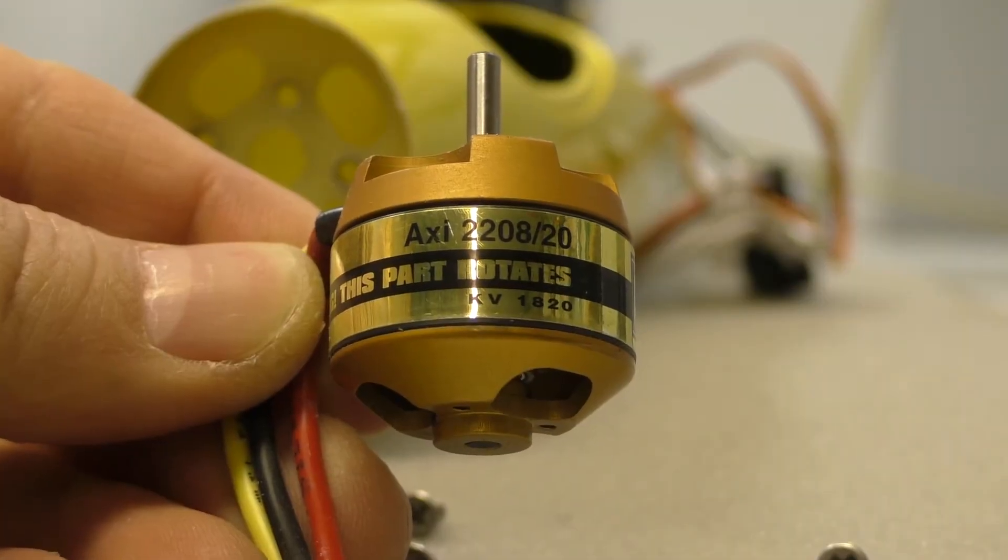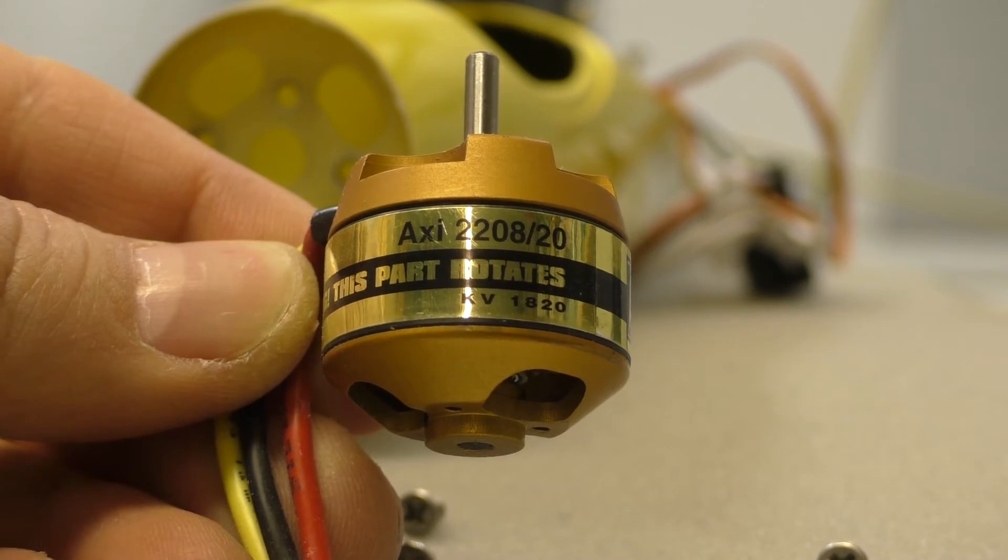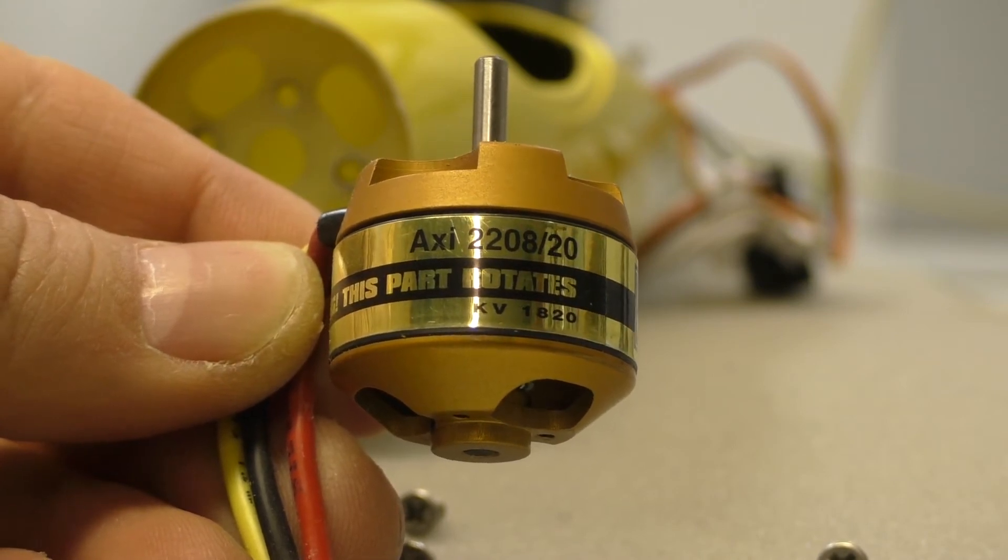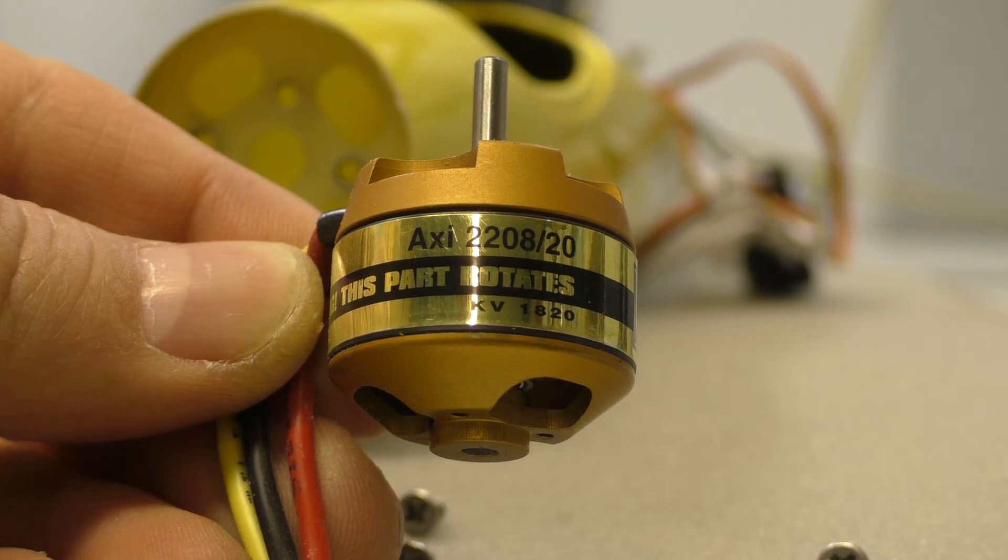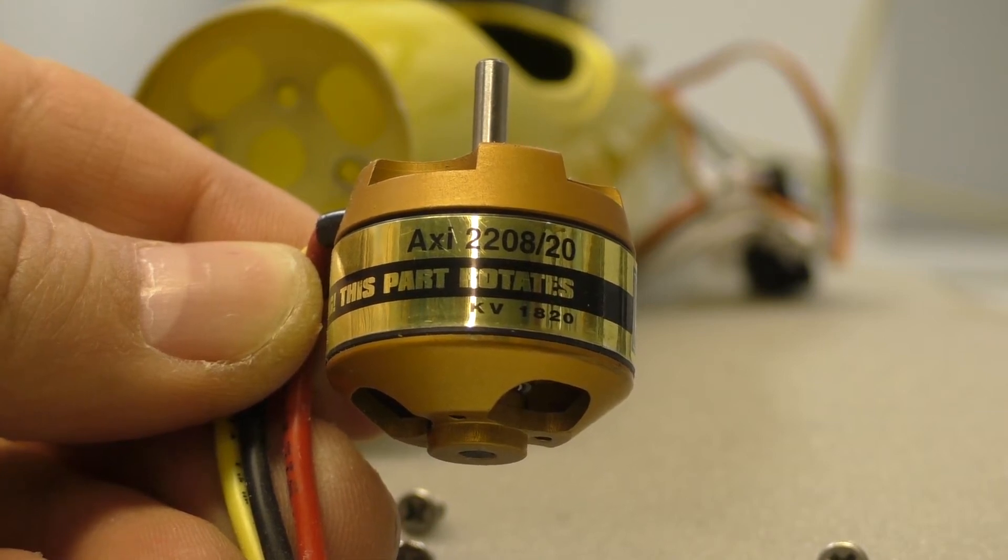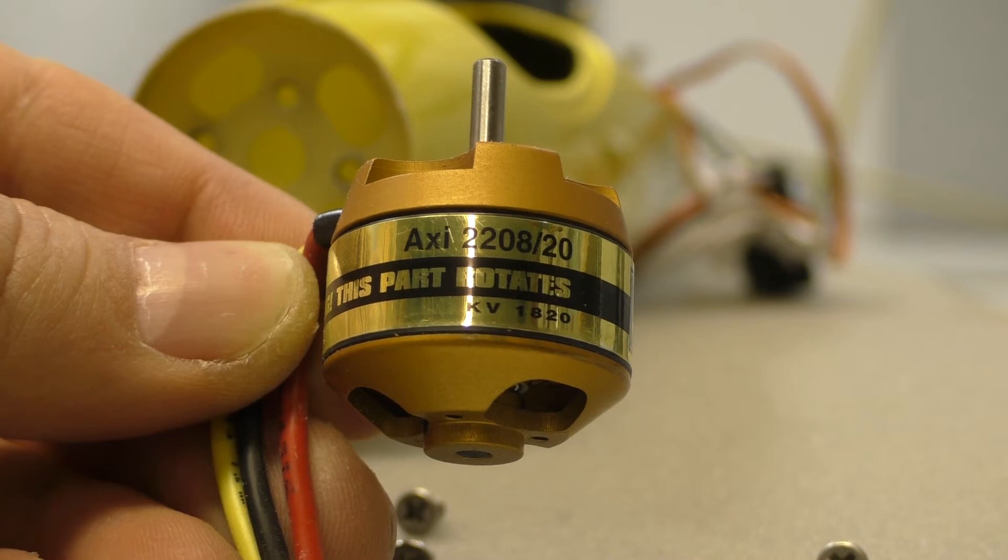This motor is fine on 2S, it draws about 31-32 amps on full throttle with a 10 by 6 inch folding carbon prop with a 38mm spinner.